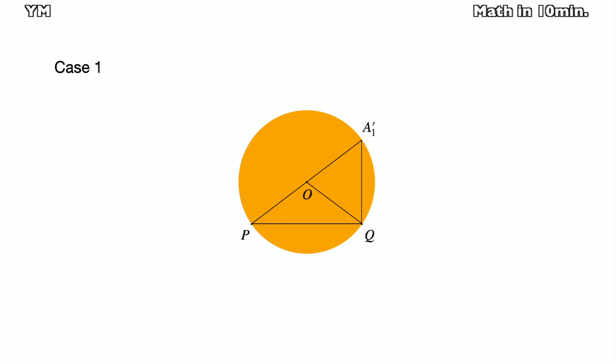The first case is that the center of the circle lies on a line of the inscribed angle. I will prove that the angle A1 is half of the angle POQ.